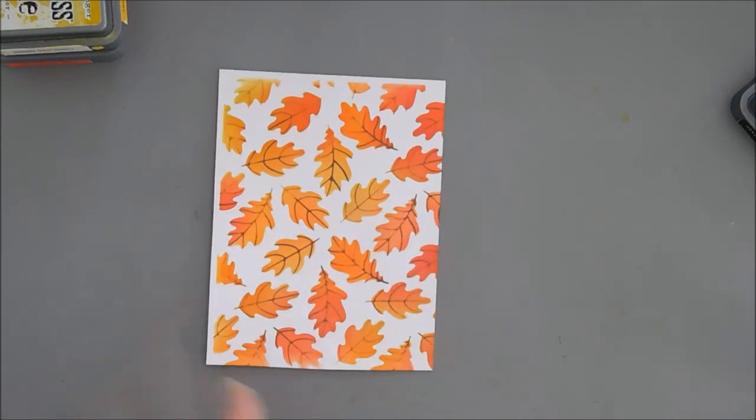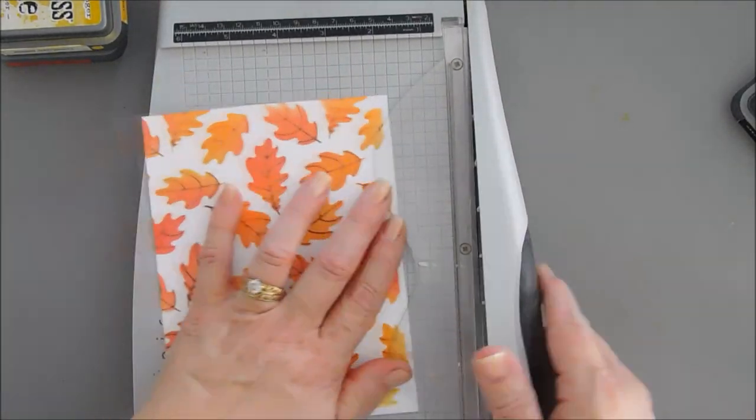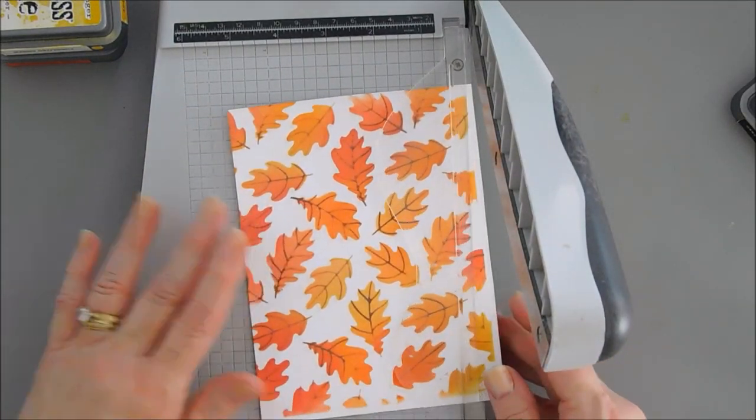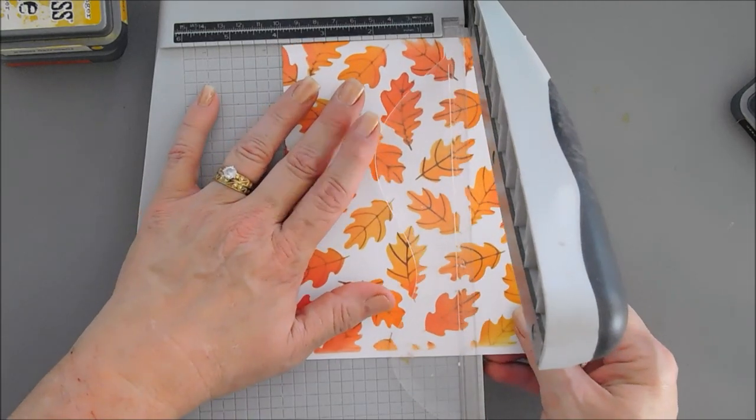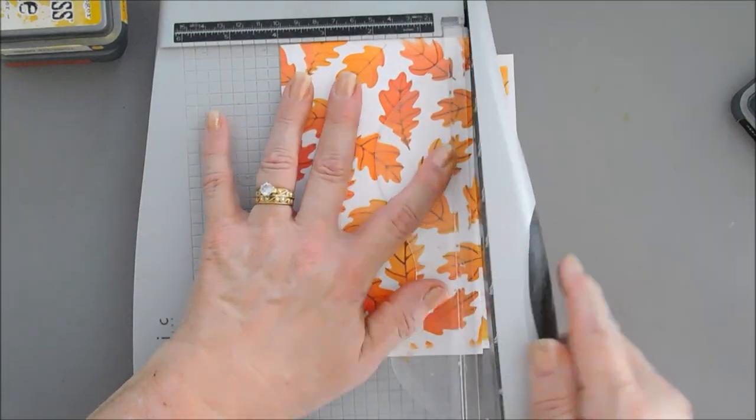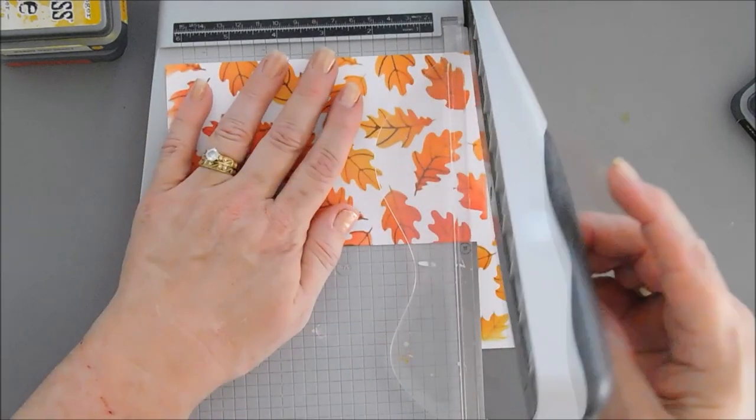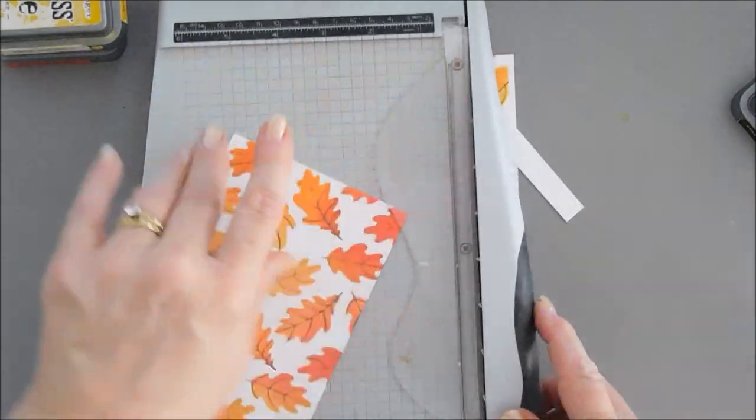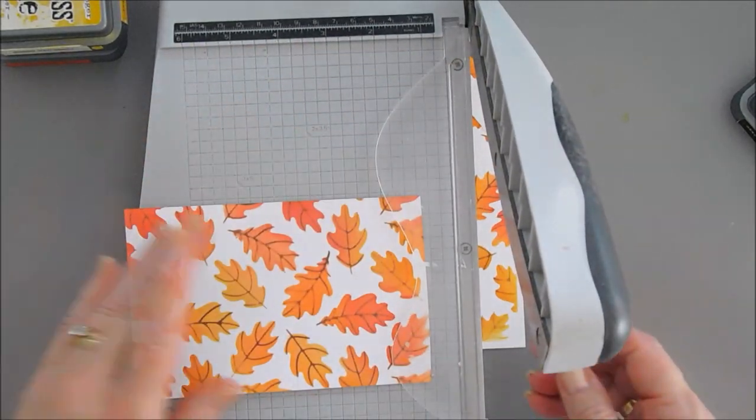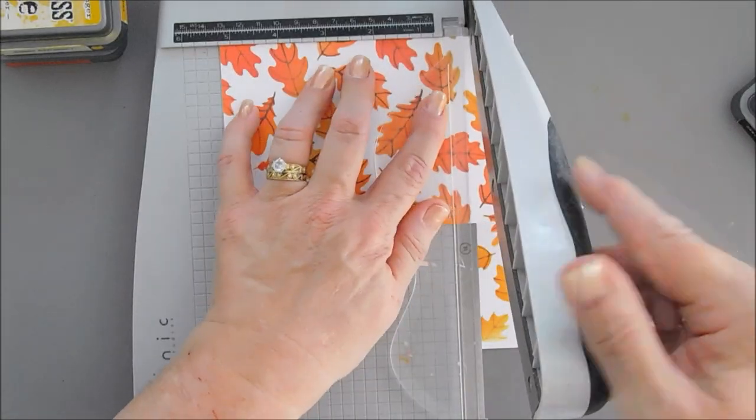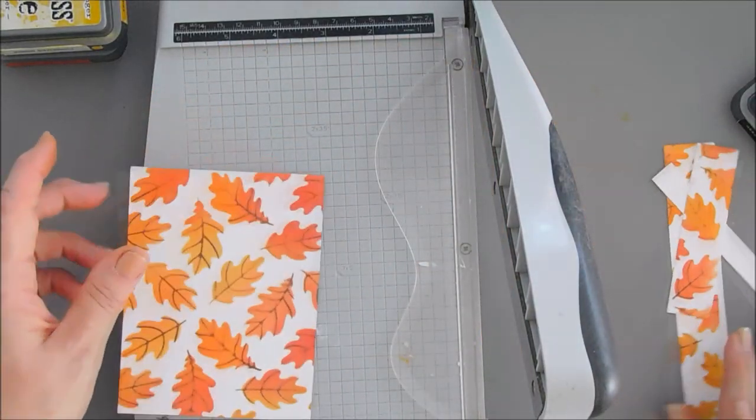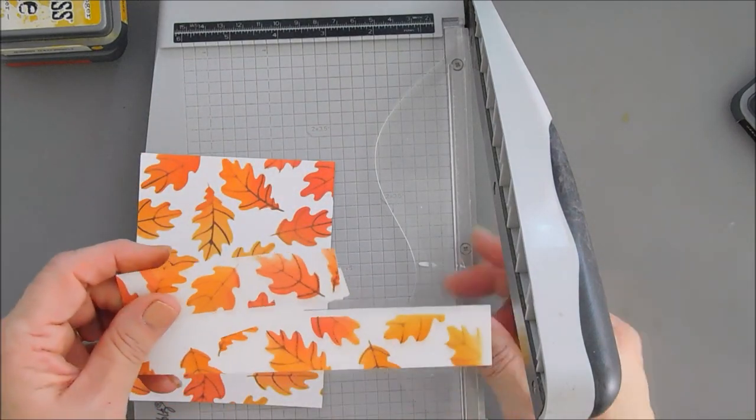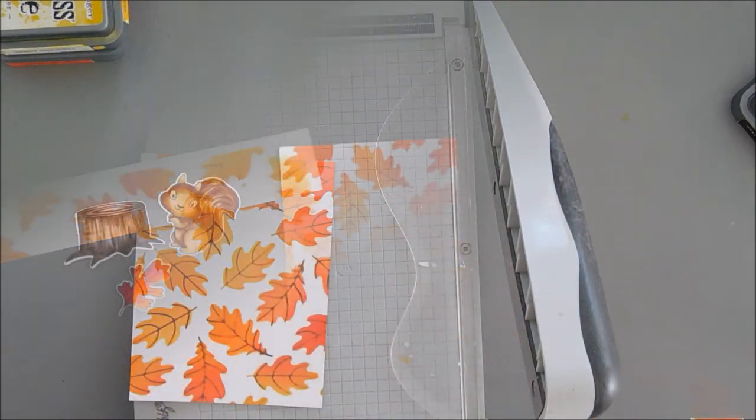I'm going to use my paper trimmer. And we're going to trim down this to a card front panel. Actually, we're going to trim it down to 4 inches by 5 and a quarter. So I'm going to have a little bit. You can actually save these for another project.